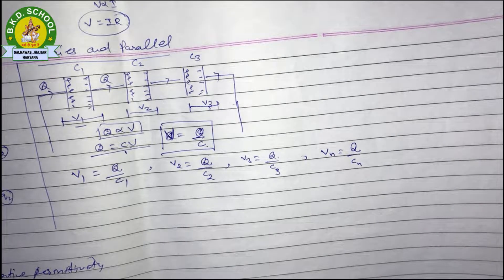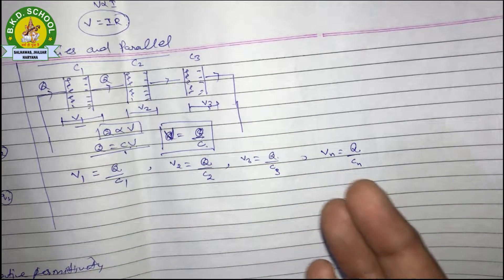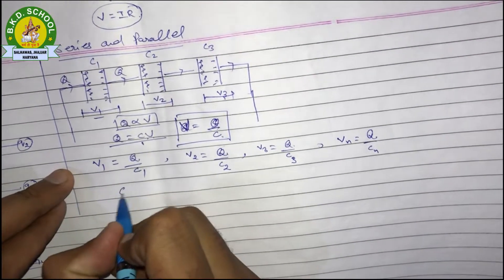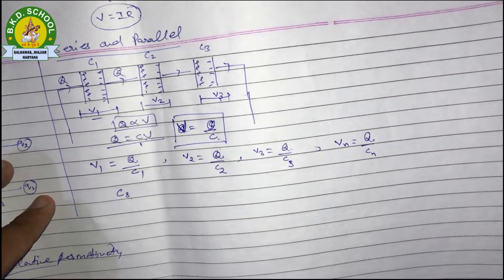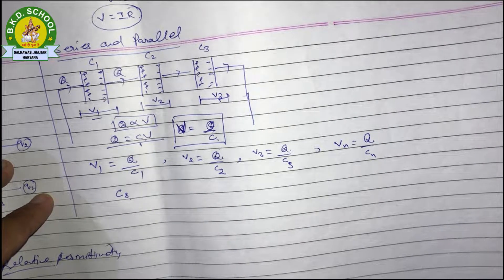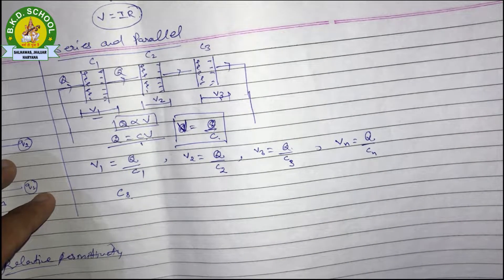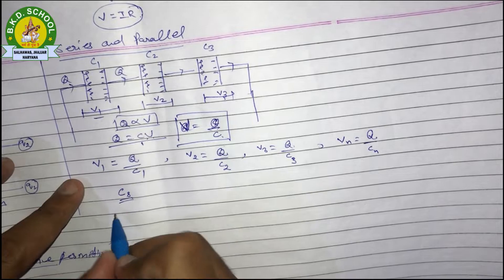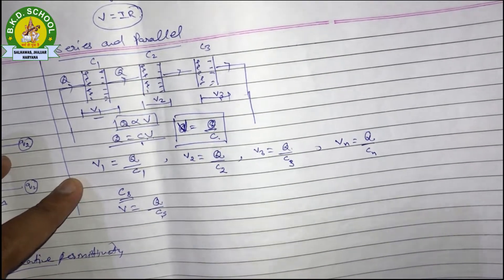If Cs is the total capacitance of the combination — the small 's' in Cs means capacitors are connected in series — then the potential difference across the terminals is V, and V = Q/Cs.